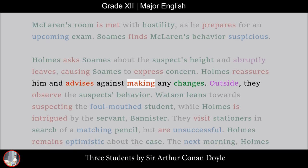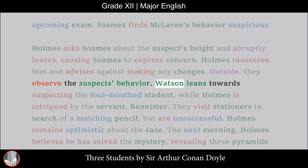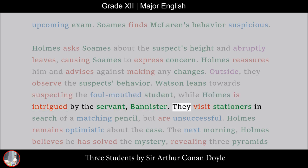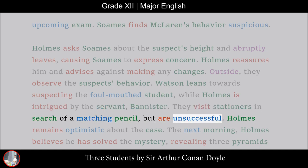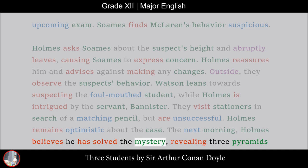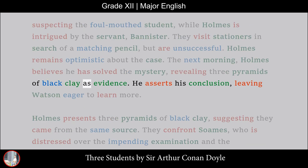Holmes reassures Soames and advises against making any changes. Outside, they observe the suspect's behavior. Watson leans towards suspecting the foul-mouthed student, while Holmes is intrigued by the servant Bannister. They visit stationers in search of a matching pencil, but are unsuccessful. Holmes remains optimistic about the case. The next morning, Holmes believes he has solved the mystery, revealing three pyramids of black clay as evidence. He asserts his conclusion, leaving Watson eager to learn more.